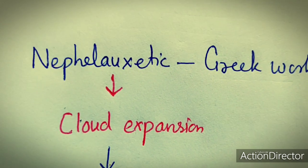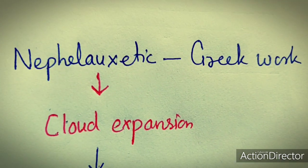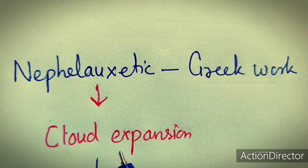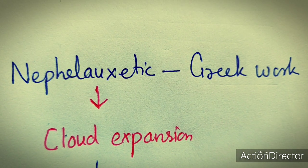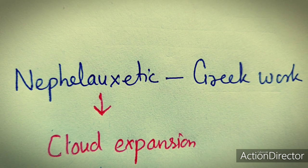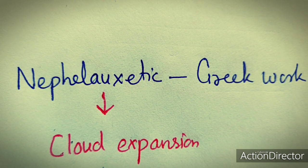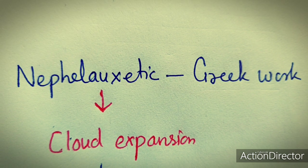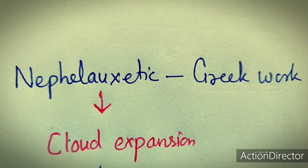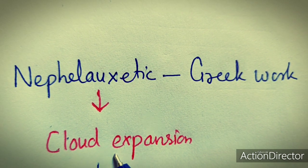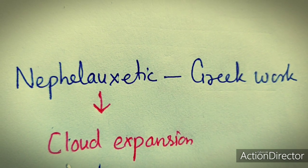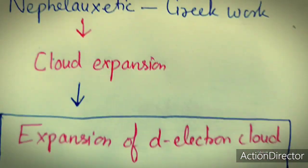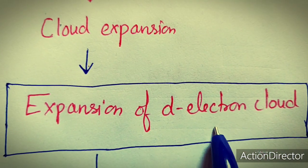Nepheloxetic is a Greek word which means cloud expansion. Cloud expansion refers to the expansion of space in which electrons can move. So due to complex formation, cloud expansion takes place — meaning the space available for the movement of electrons expands. This is nothing but expansion of the d-electron cloud.